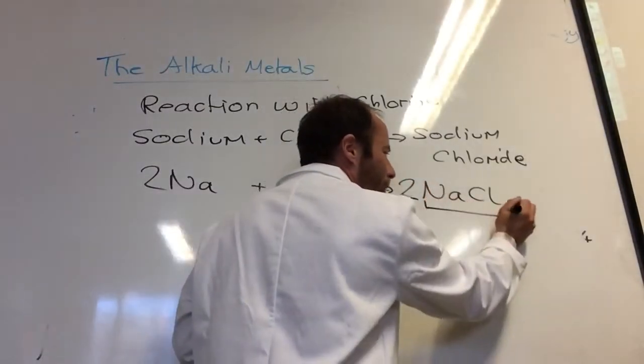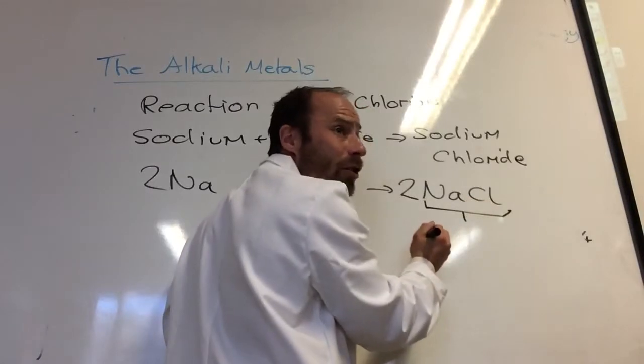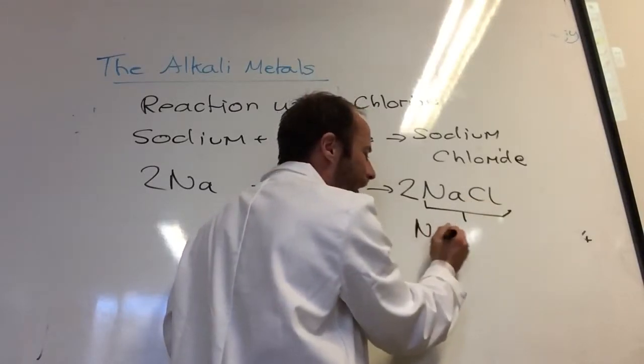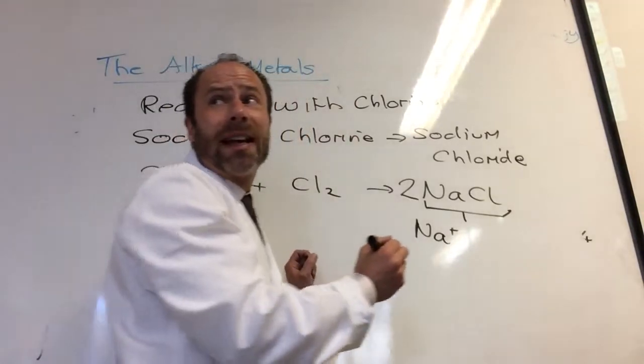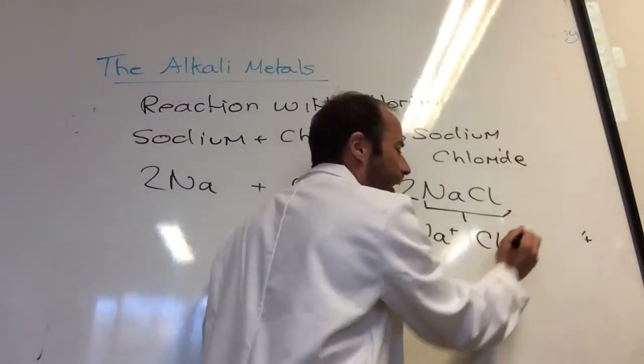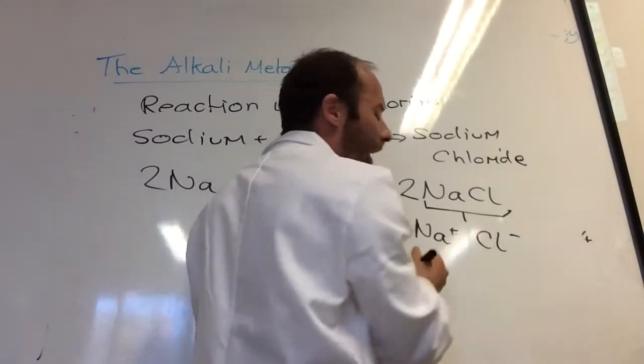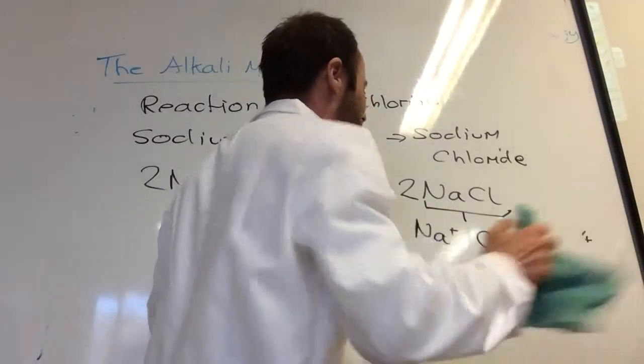How do I know the formula of Sodium Chloride is that? It's because Sodium is in group 1, so it forms Na+ ions. Chlorine is in group 7, so it forms Cl- ions, so it's 1 to 1, NaCl, like so.